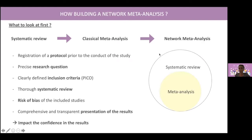So, how does one build a network meta-analysis? It is important to remember that network meta-analysis comes after a systematic review and a classical meta-analysis. You must follow some rules such as registration of a protocol prior to the conduct of the study, including the research question — for example, is treatment A efficient for this disease? You must clearly define the inclusion criteria, including the target population, the intervention, the comparators, and the outcomes. Then you perform your systematic review, assess risk of bias for all included studies, and provide comprehensive and transparent presentation of the results.